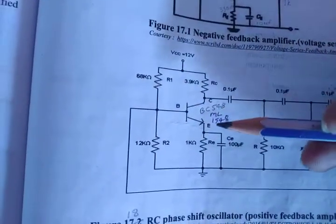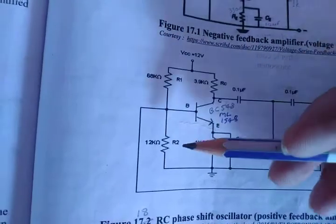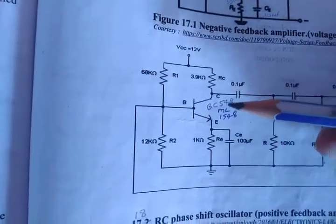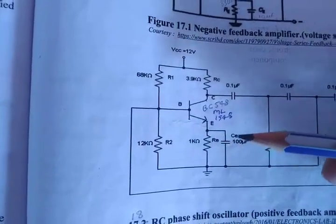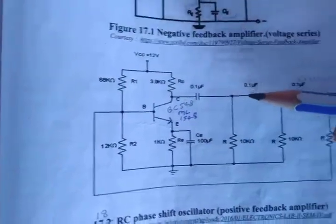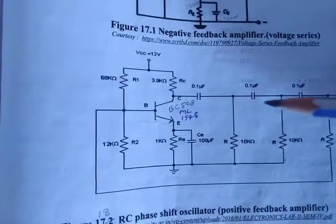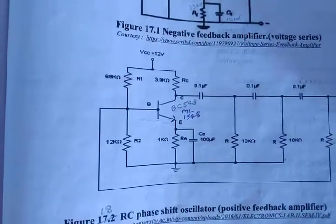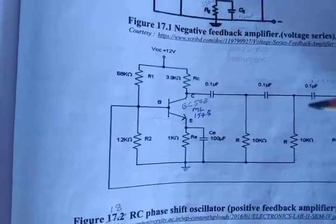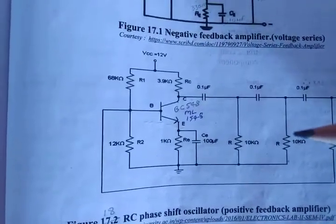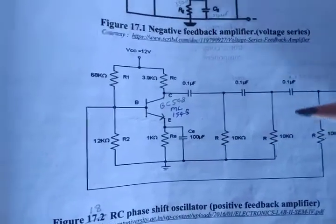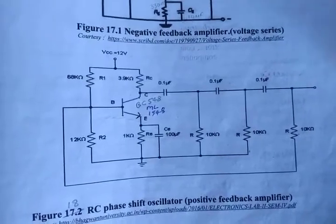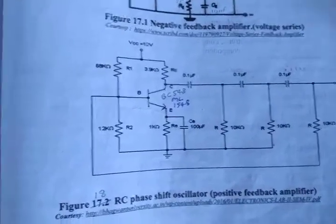The components used here include the transistor BC548 in common emitter configuration as the amplifier block. R1 and R2 act as a voltage divider for biasing. RC is 3.9 kilo ohm and the emitter resistor is 1 kilo ohm. The bypass capacitor is 100 microfarad. Three stages of RC network are formed using 10 kilo ohm resistors and 0.1 microfarad capacitors each. The frequency of oscillation is decided by these R and C components, so by varying resistance or capacitance we can change the output frequency of the generated sine wave.